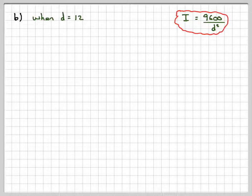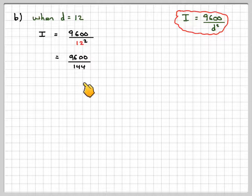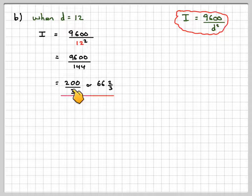When D is 12, so we put D is 12 in this, we get I is 9,600 over 12 squared. So that would be 9,600 over 144. We work that on our calculator, we get 200 over 3, or 66 and 2 thirds.